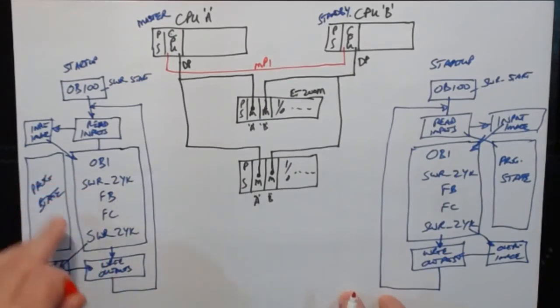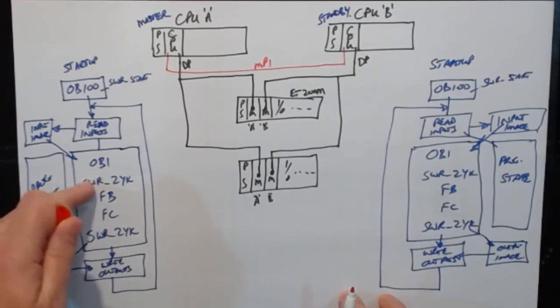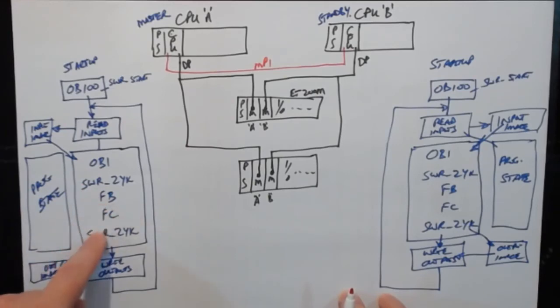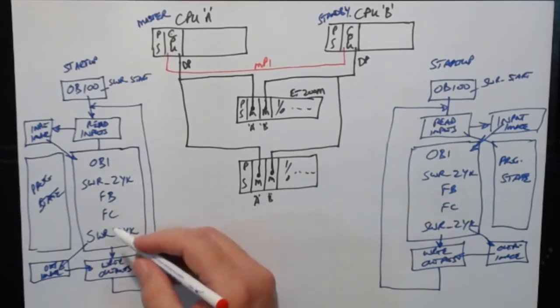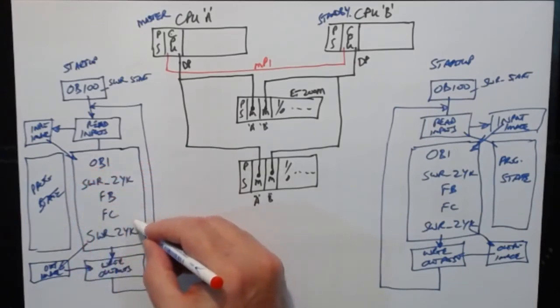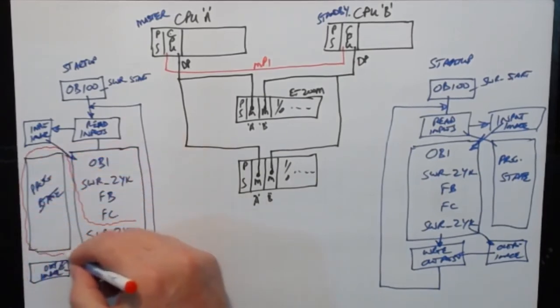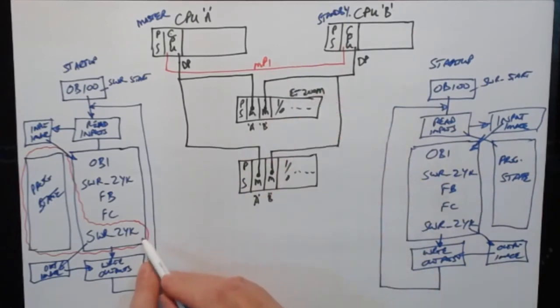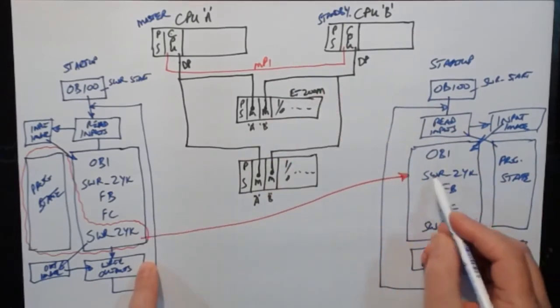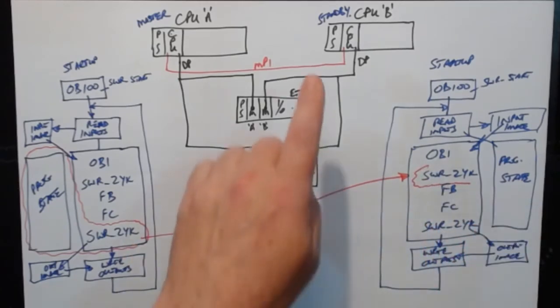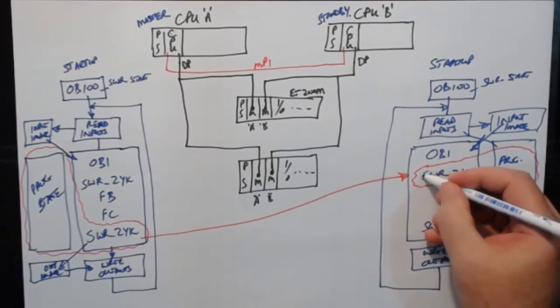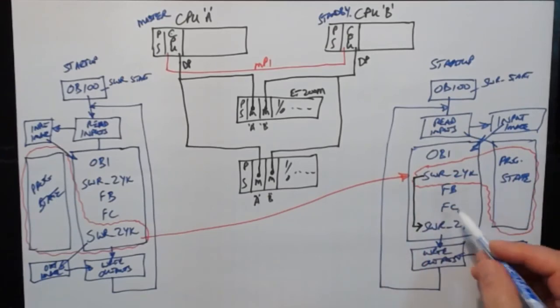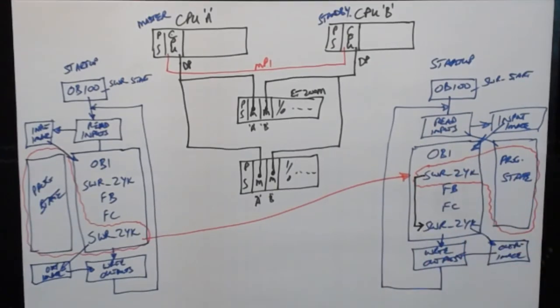If this one is the master, then it runs at the end of this call. It runs through the redundant program, updates the program, updates the program state exactly as a normal PLC would. Comes to the end, it does this call. And what happens here is this block picks up the program state and sends it over MPI to this block on the standby PLC. Standby PLC then updates the program state. And because it knows it's in standby, it will jump that program and it will not run the redundant program.